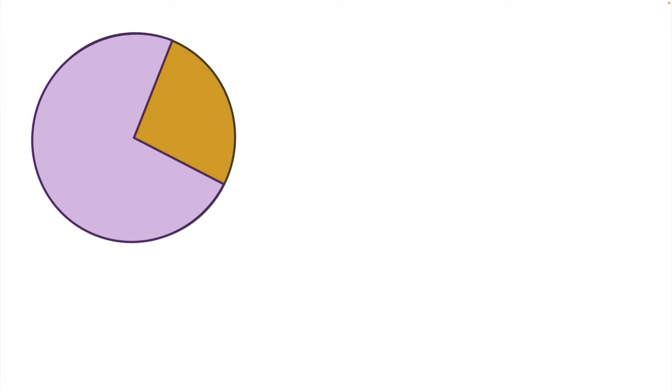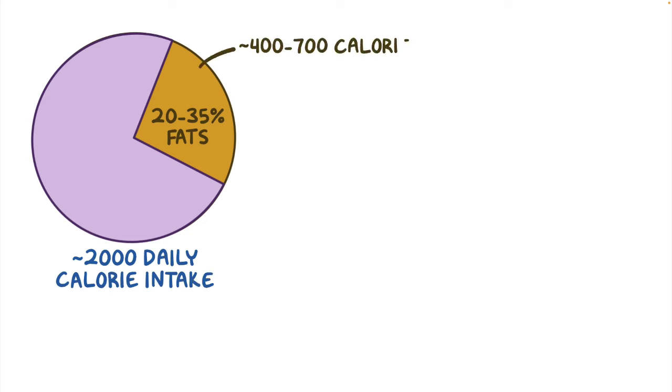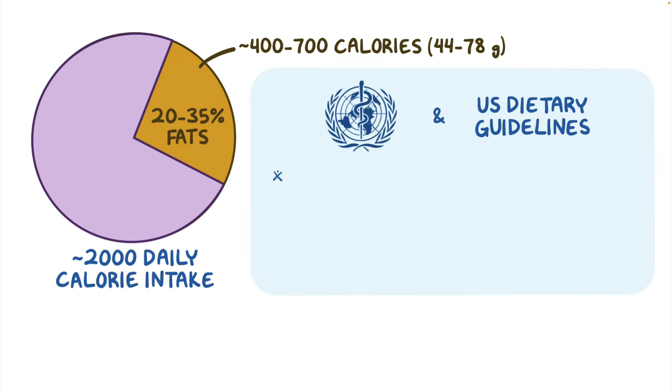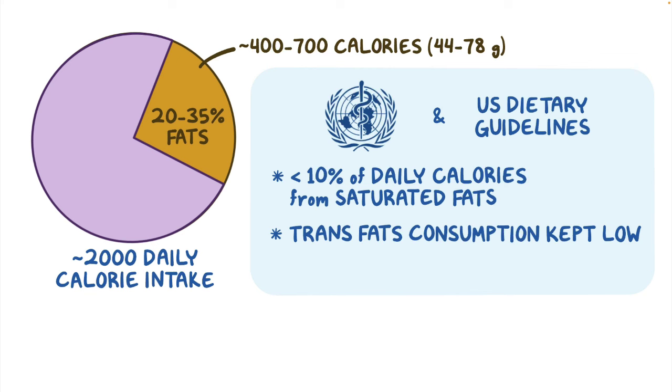Based on this, the National Academies of Medicine recommends consuming 20-35% of our daily calories as fat for a 2,000 daily calorie intake. That comes out to between 400-700 calories from fat, or about 44-78 grams. And it's not just about the amount of fat that we eat, the type also matters. The World Health Organization and the US Dietary Guidelines recommends that less than 10% of daily calories comes from saturated fats and that trans fat consumption should be kept as low as possible.